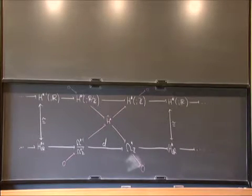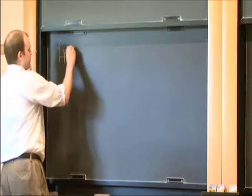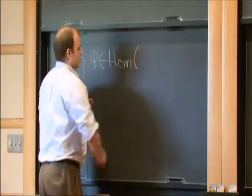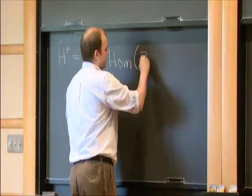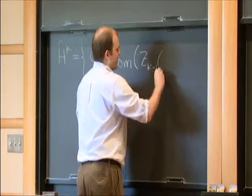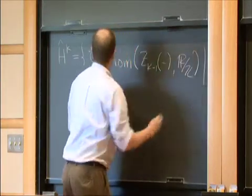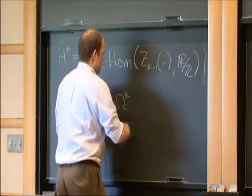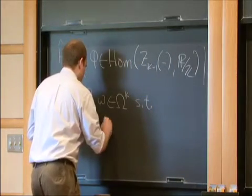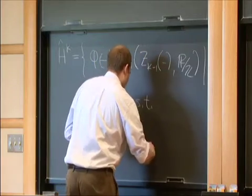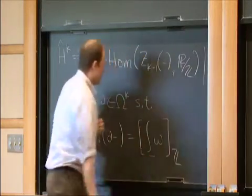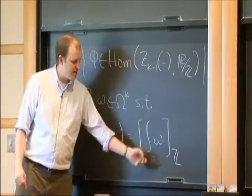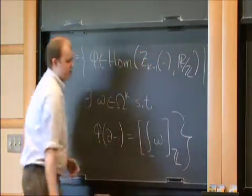The original definition was given for differential characters by Simons and Shiger back in the 70s. It's given by taking homomorphisms from the k minus 1 cycles into R mod Z, such that there exists some form where when I apply this homomorphism to the boundary of something, it's given by integrating that form over whatever that something I took the boundary of, and reducing mod Z. These are the ordinary differential characters.